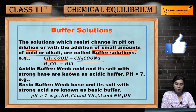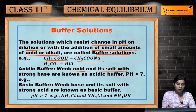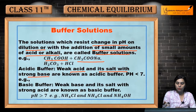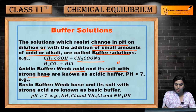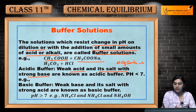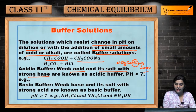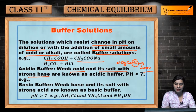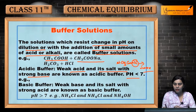What is acidic buffer? Weak acid and its salt with strong base — this is very common. For example, CH3COOH is the weak acid and CH3COONa is its salt. CH3COONa comes from NaOH which is a strong base. Weak acid and its salt with strong base are known as acidic buffer, which will have pH less than 7.